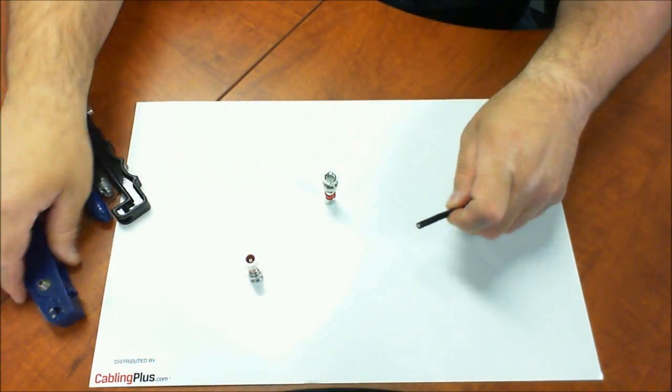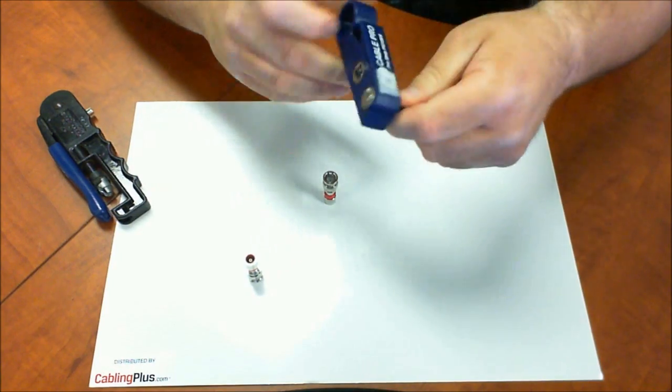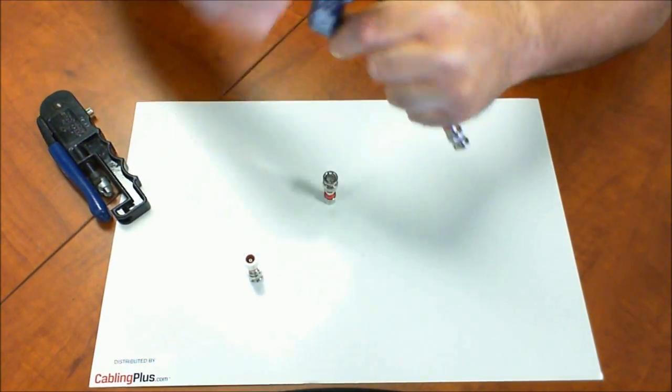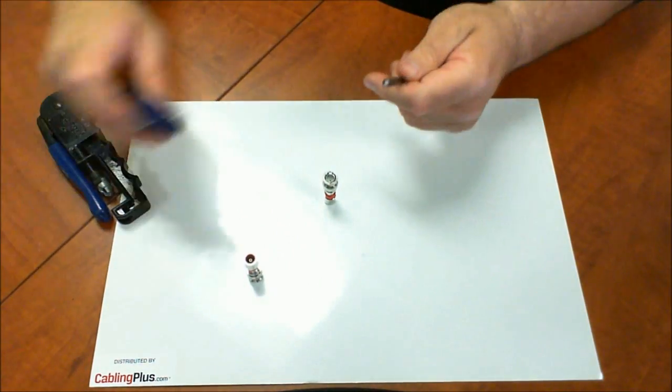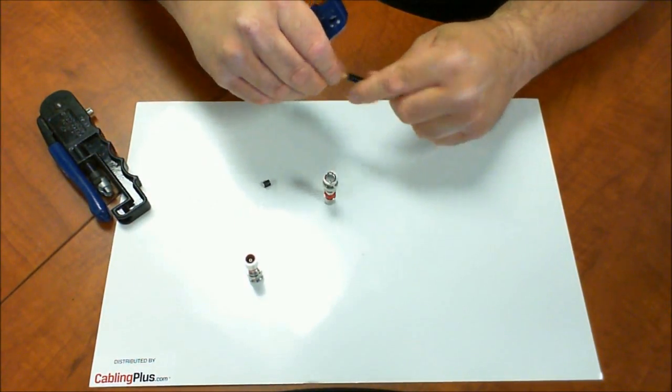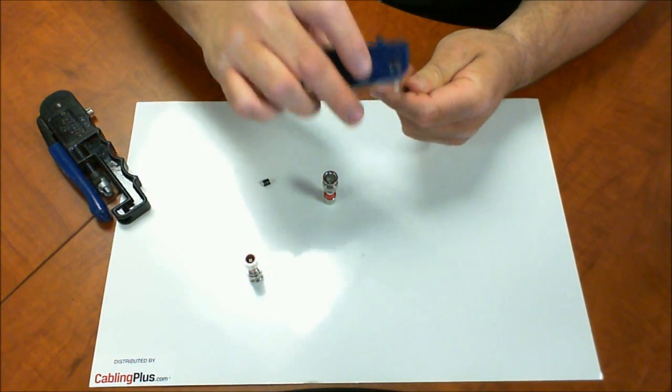Let's just go ahead and show it by getting a piece of RG59. I just got some CMR rated standard RG59. As you know, most of the RG59 for CCTV applications is going to provide a 20 gauge center conductor.